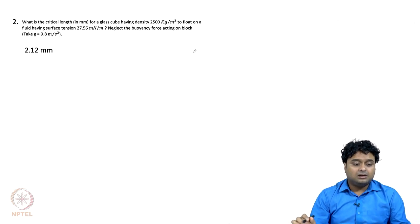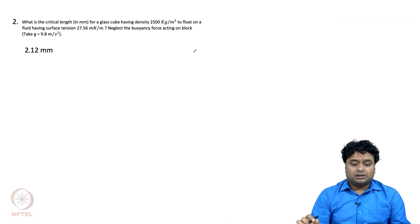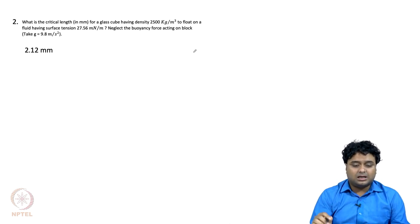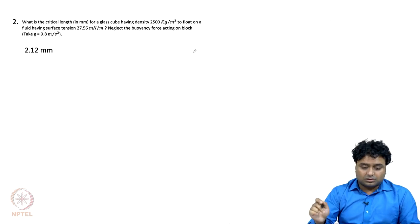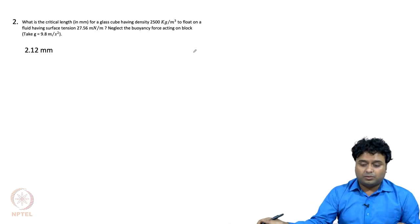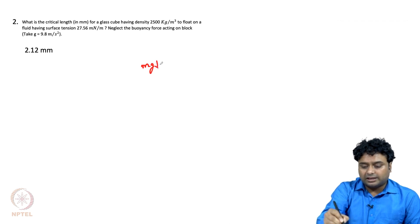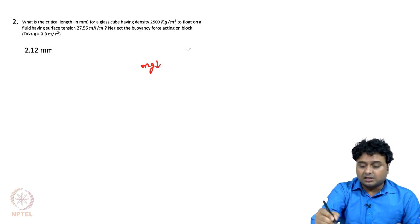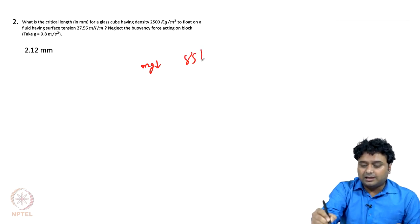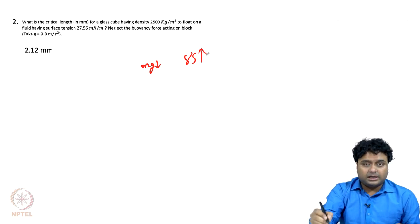The next question is from scaling: what is the critical length for a glass cube having density of 2500 kg per meter cube to float on a fluid having surface tension of 27.56 milli Newton per meter, where buoyancy is neglected? This problem is similar to the one discussed during the lecture, just with different values. We know there are two forces: the weight mg acting downward, and the surface tension force gamma times S acting upward.